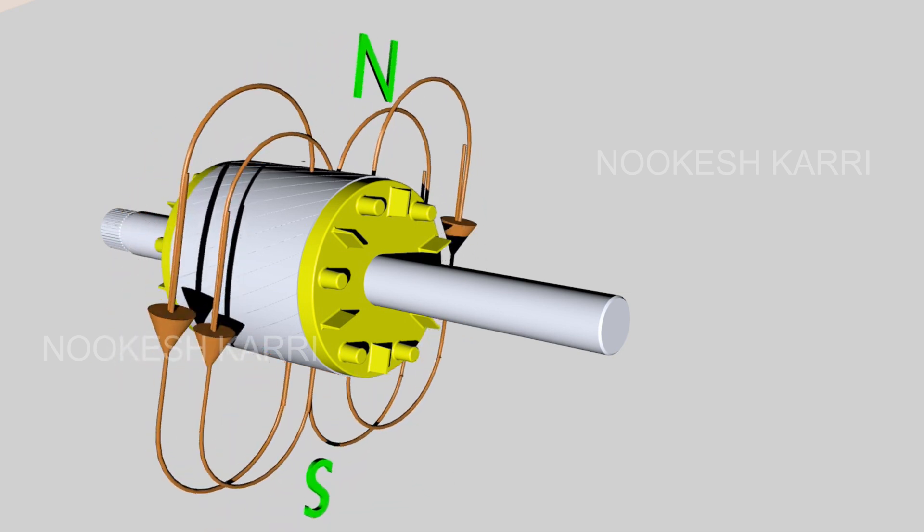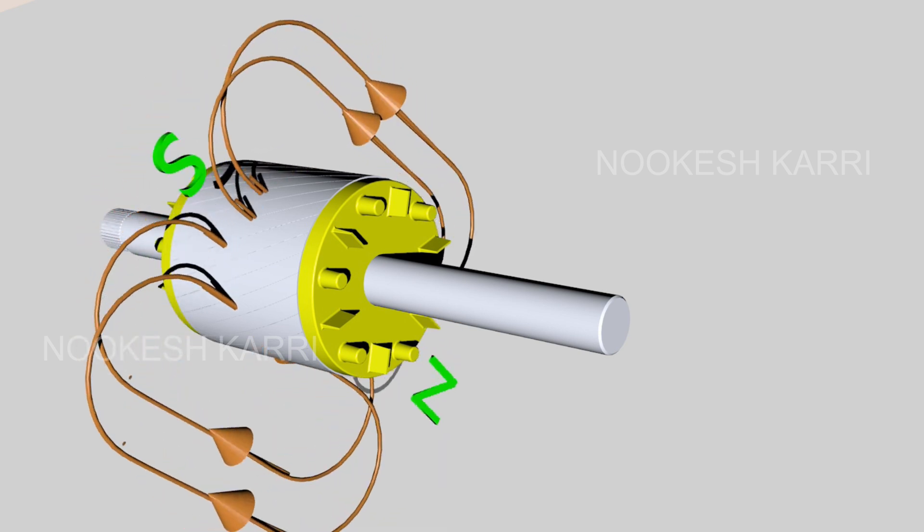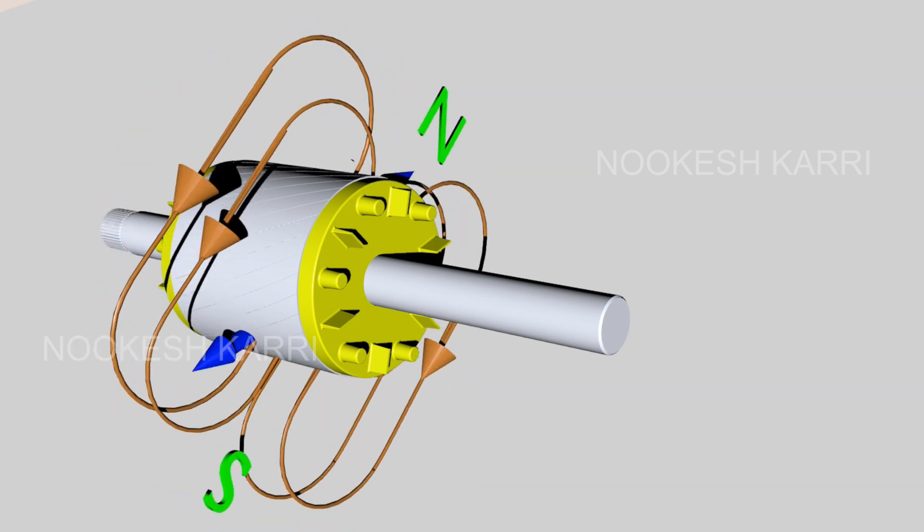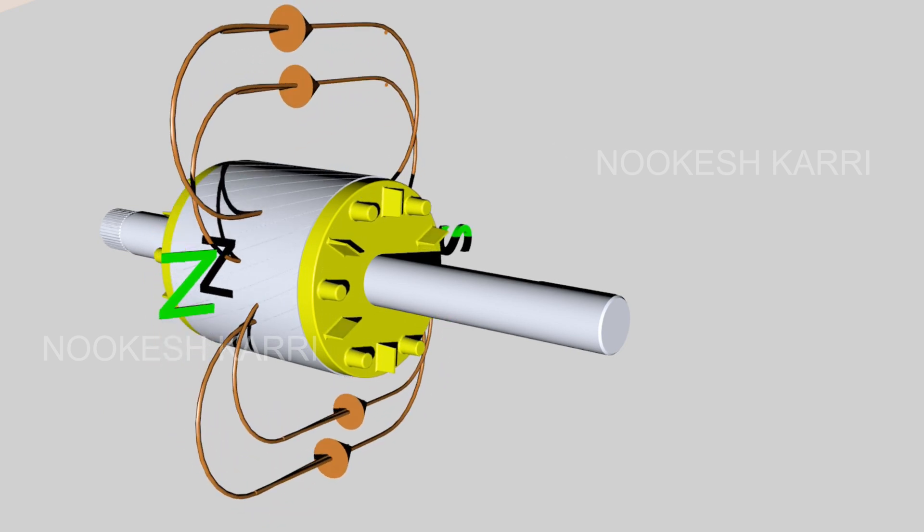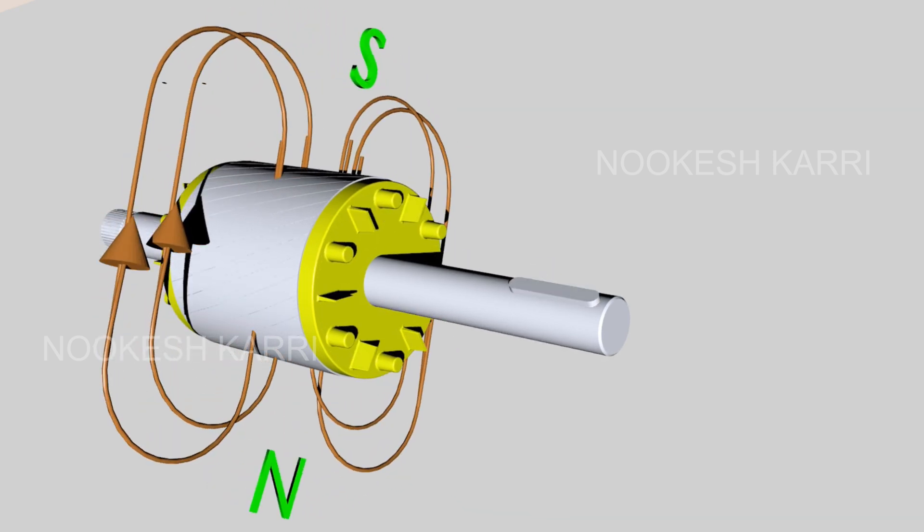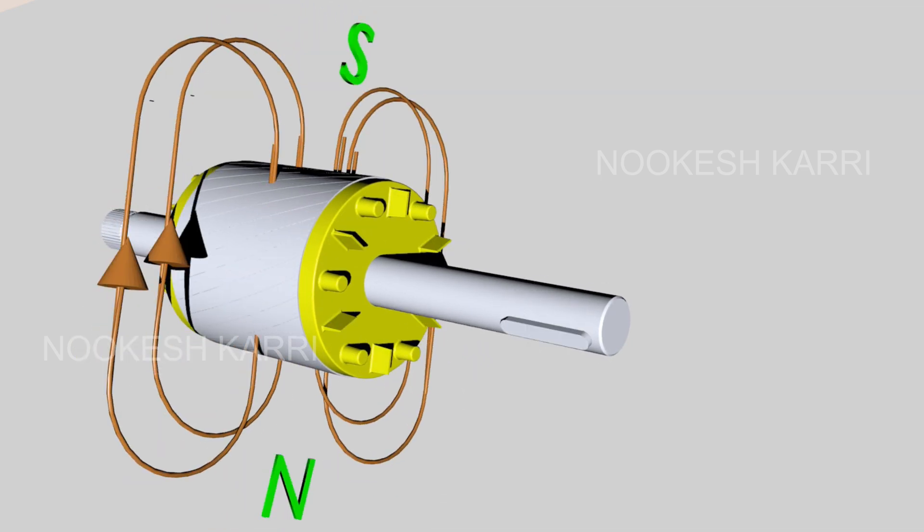As the current flows through the rotor conductor, the flux is induced on it. The relative motion between rotating stator flux and rotor flux causes the rotor flux to try to catch up with the stator flux. According to Lenz's law, the rotor rotates in the direction of stator flux to minimize relative motion. And this is how the rotor starts rotating.